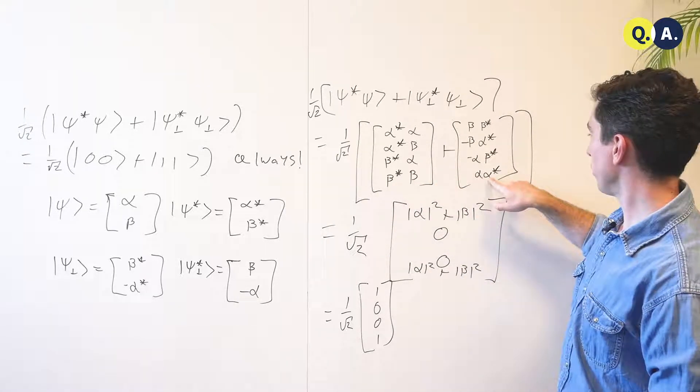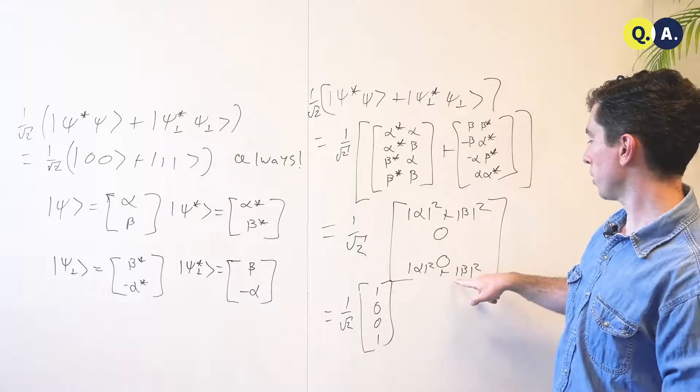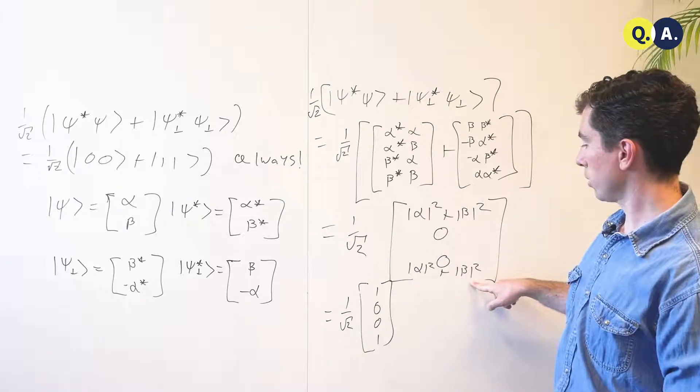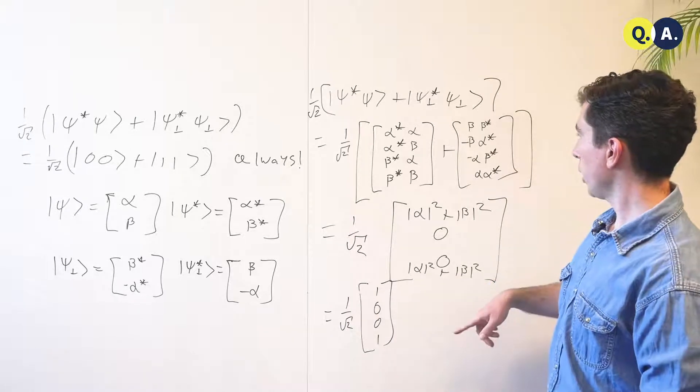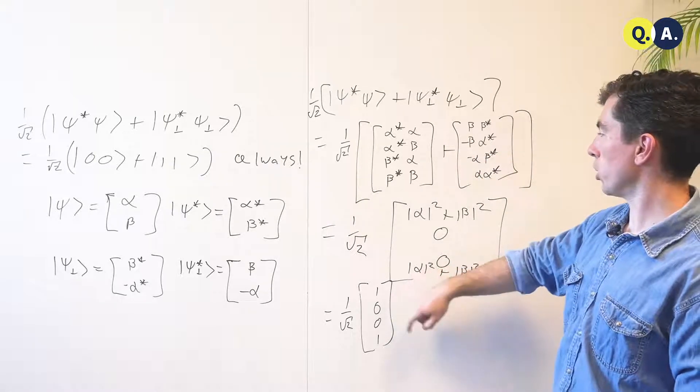Now, beta star beta plus alpha star is just the magnitude of alpha squared plus the magnitude of beta squared, which is 1. And we see the same thing in the top term here, alpha star alpha plus beta beta star, that's 1.